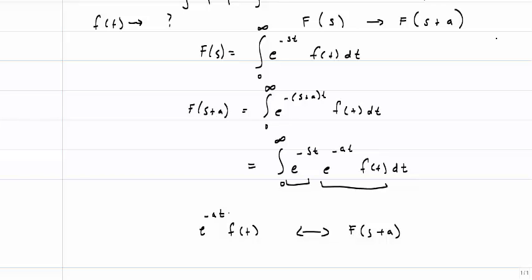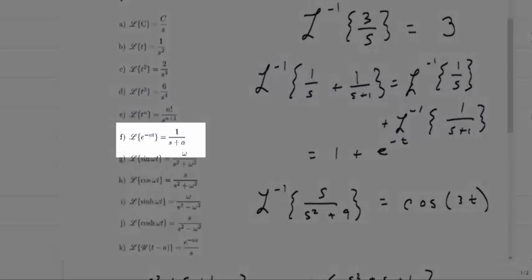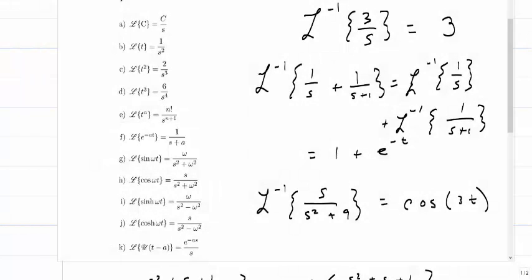I often have trouble remembering whether it's s + a or s − a, and whether it's e to the plus or minus a. But on the exam the table gives you the answer: entry f shows the Laplace transform of e^(−at) equals 1 over s + a, which is a constant of 1 shifted in the s domain. You can always use the table to keep track of where the negative signs go.